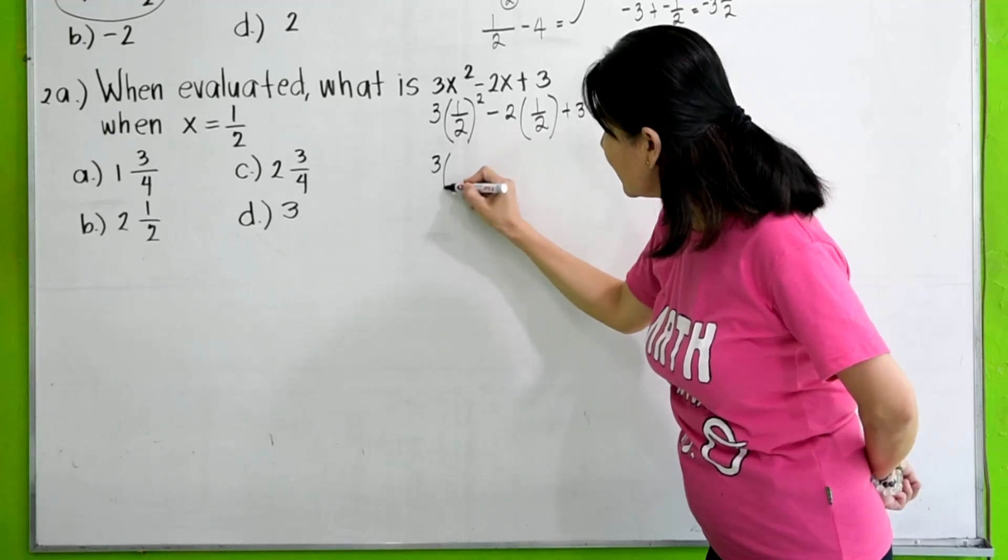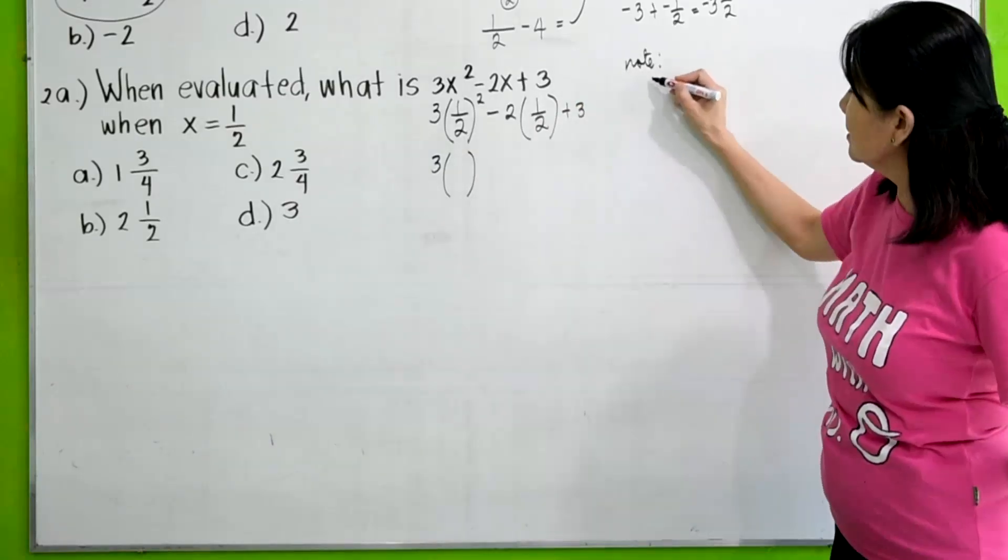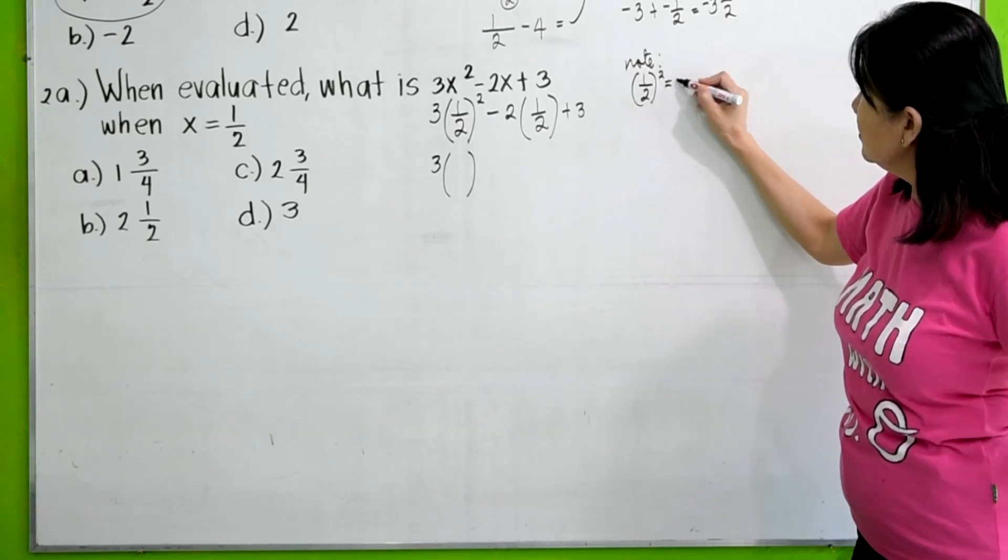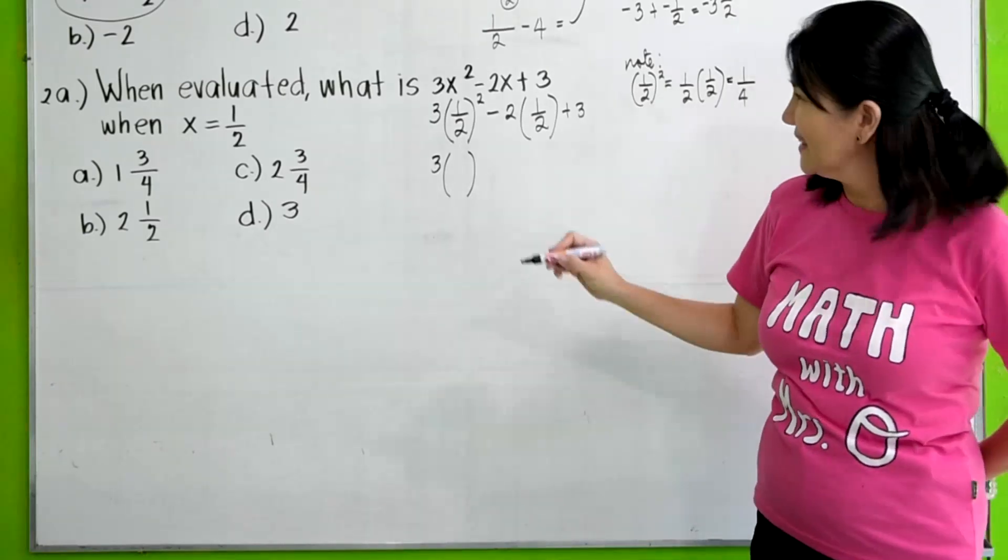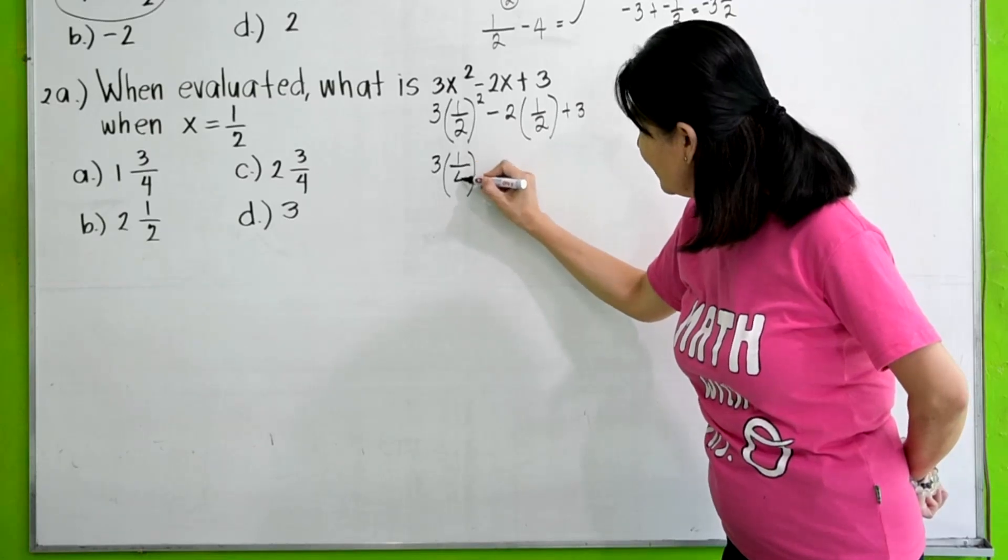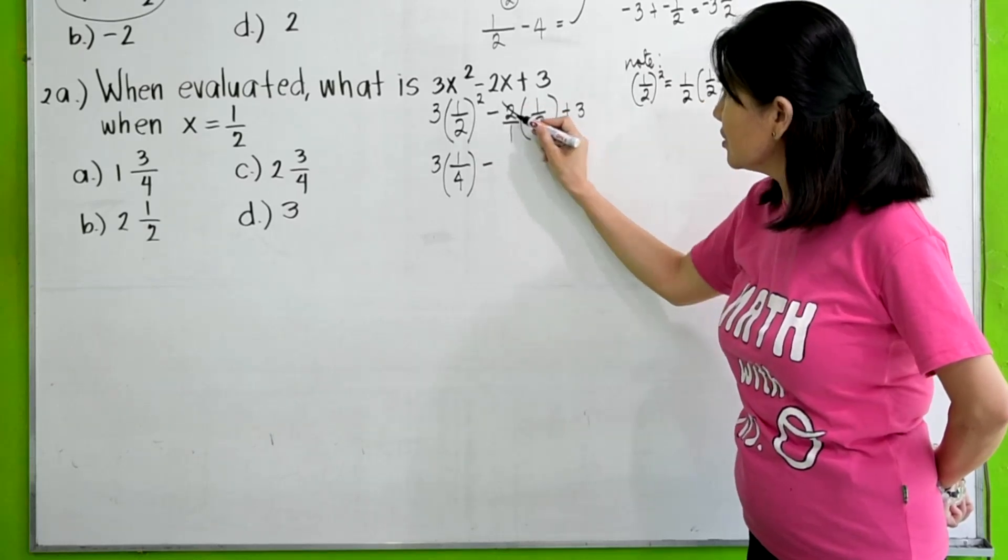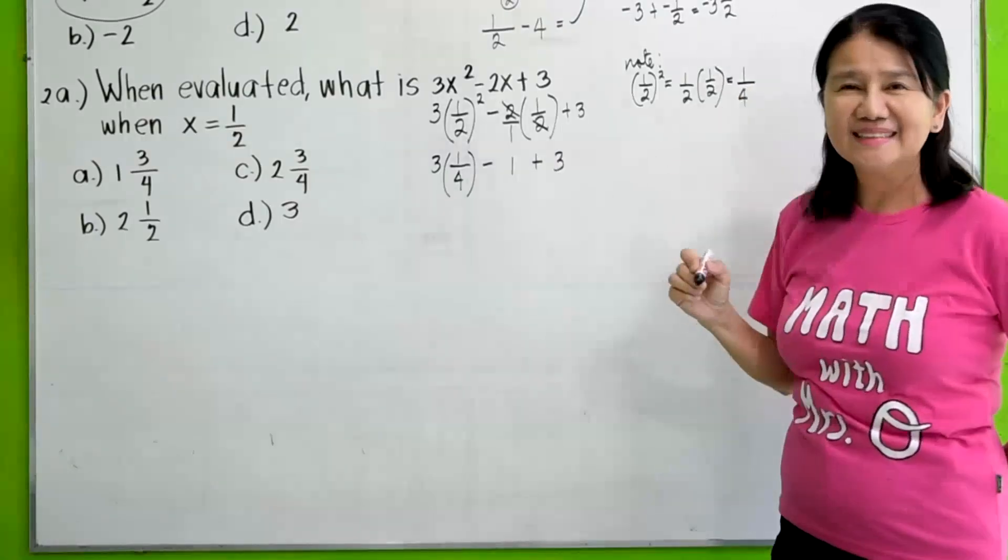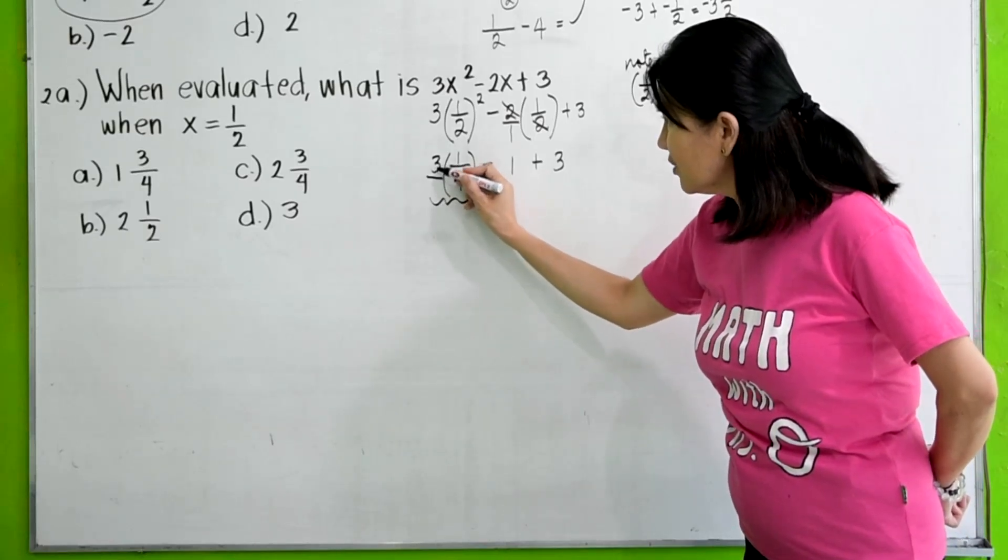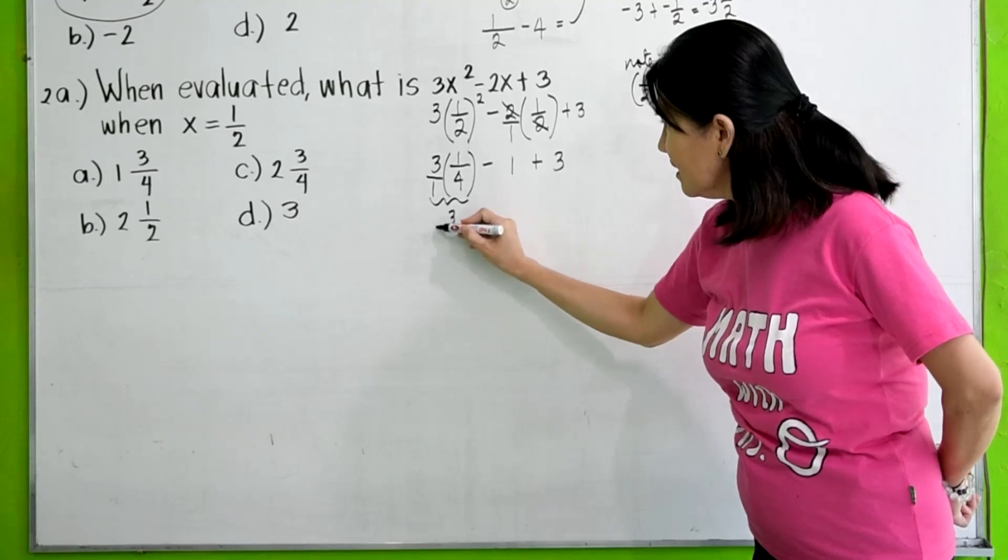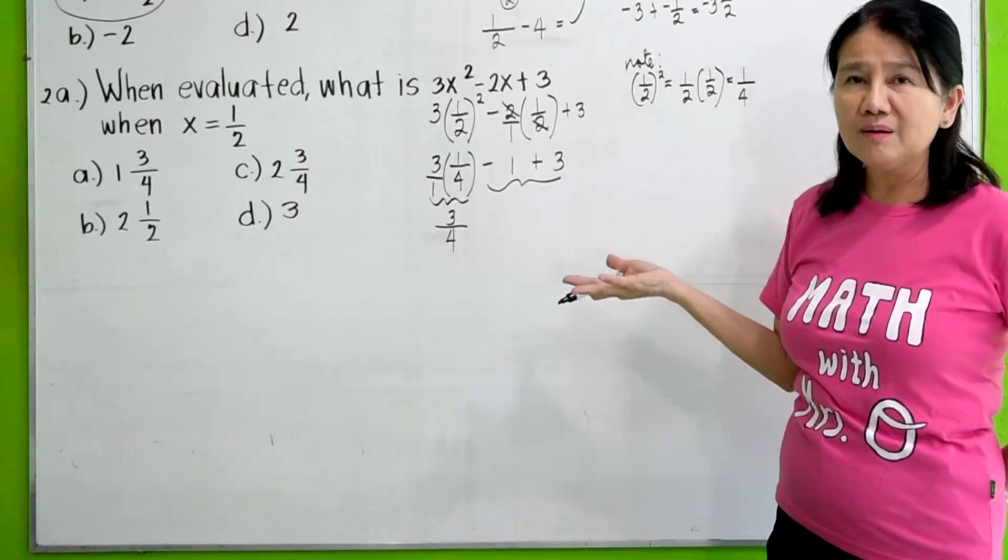Then, PEMDAS tells us to do the exponents first. So, this is now 3 times 1/2 squared, which means 1/2 times 1/2. 1/2 squared is equal to 1/2 times 1/2, which gives you 1/4. So, let's write here 3 times 1/4 minus 2 times 1/2. This means 2 over 1. So you just cancel this. 2 over 2 is 1 plus 3.